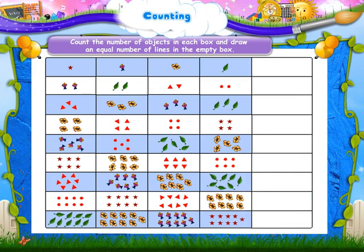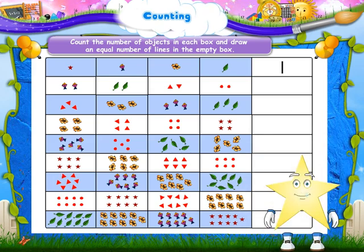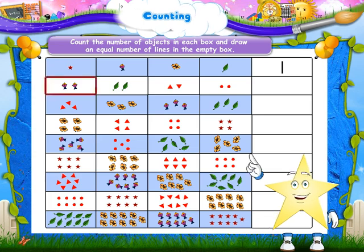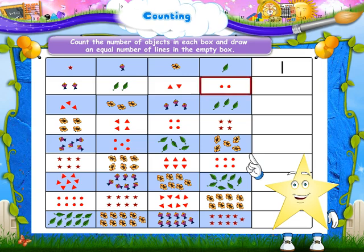Two kites. Two leaves. Two triangles. Two dots. So draw two lines in the box.